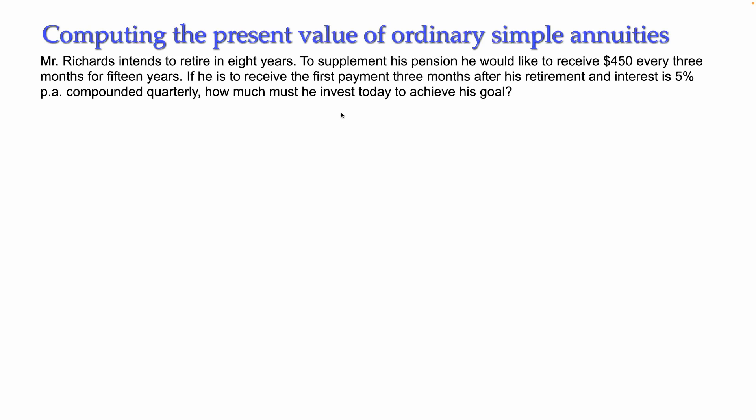Hello students. In this video I will be explaining two problems in which we need to compute the present value of ordinary simple annuities. The two problems will be combination problems — problems in which we have a part where there is actually an annuity and another part where there are no payments and just compound interest is working. The annuity in the two problems I will be explaining today will have this form.